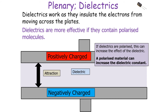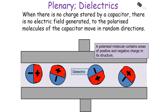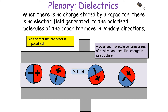The dielectric works by insulating the electrons from moving across the plates. Dielectrics are more effective if they contain polarized molecules, as a polarized material can increase the dielectric constant. When there's no charge stored by a capacitor, there's no electrical field generated, so the polarized molecules of the dielectric move around in random directions. A polarized molecule is a molecule that contains areas of both positive and negative charge in its structure. Because the polarized molecules are moving in random directions, we say the capacitor is unpolarized, with the polar molecules in all different directions with no particular orientation.